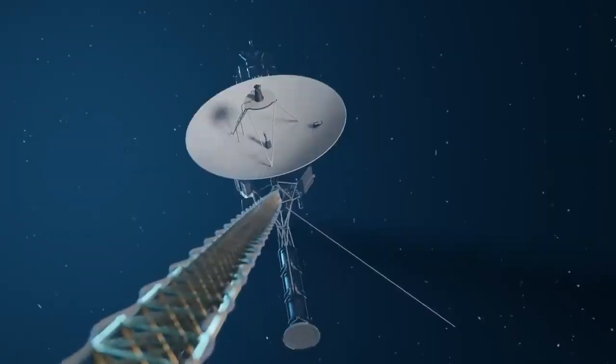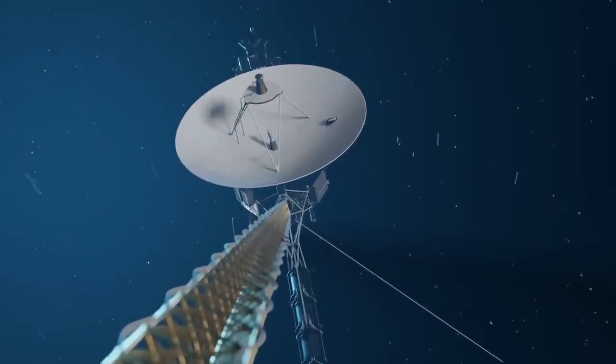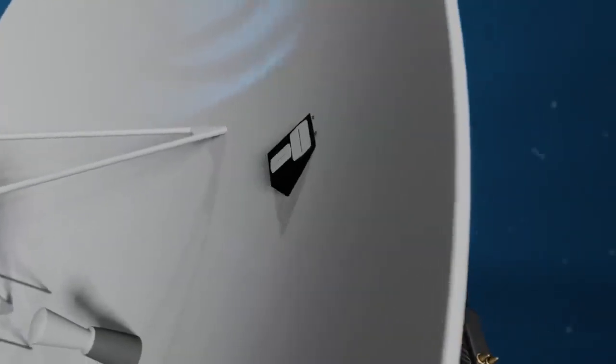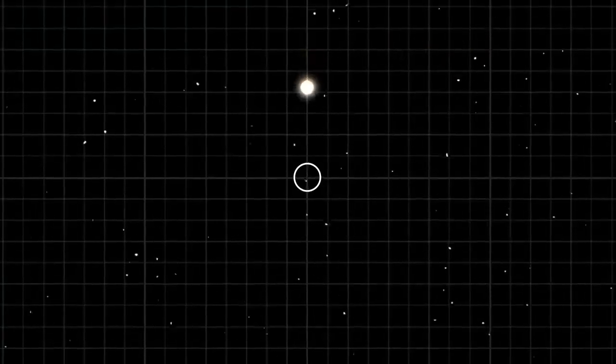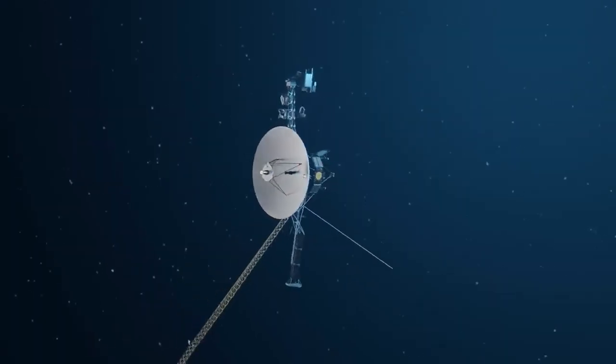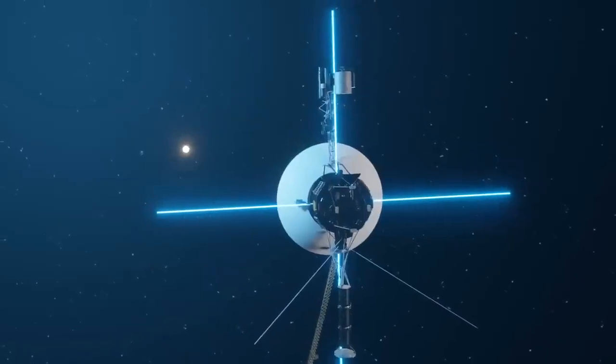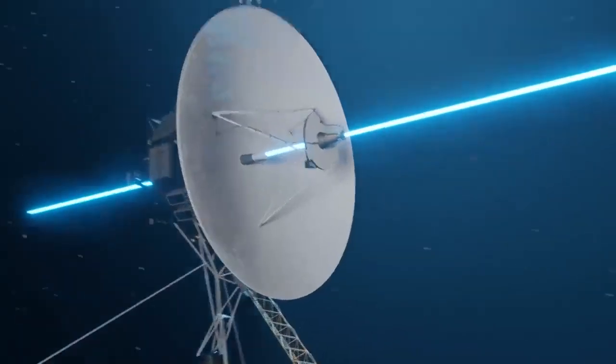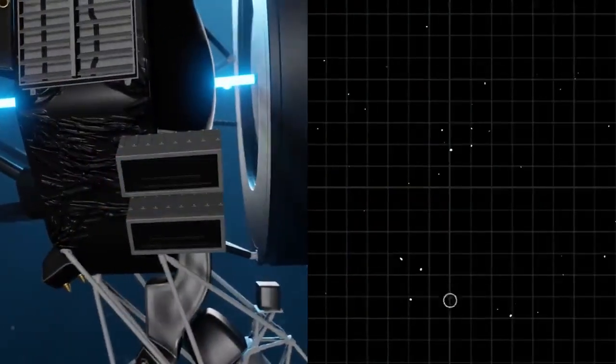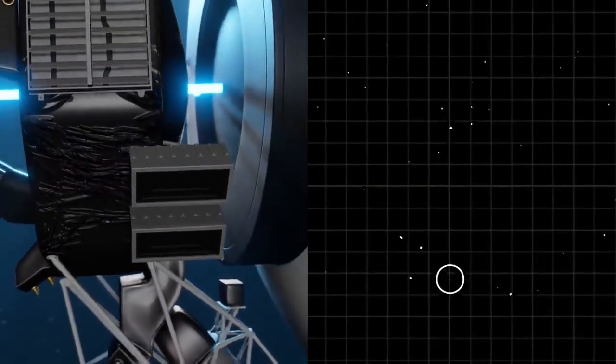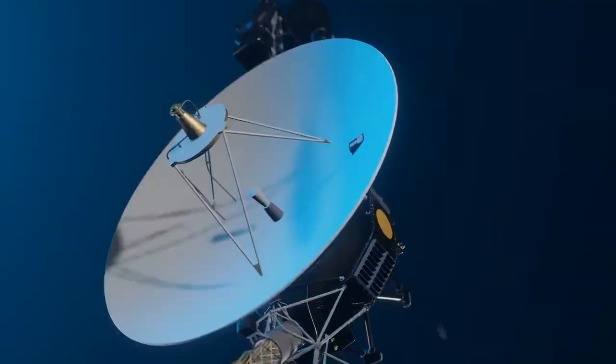Nevertheless, it is expected to continue transmitting weak radio messages until at least the mid-2020s. Since its launch, Voyager 2 has undertaken an unprecedented odyssey, visiting all four gas-giant planets in our solar system—Jupiter, Saturn, Uranus, and Neptune.